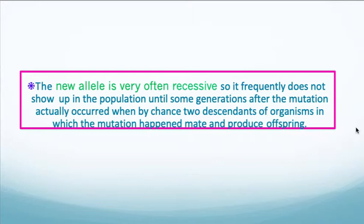The new allele is very often recessive, so it frequently does not show up in the population until a few generations after the mutation actually occurred. This would happen by chance, when two descendants of organisms in which the mutation happened mate and then produce offspring.